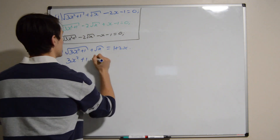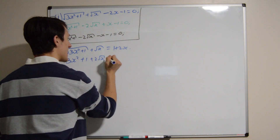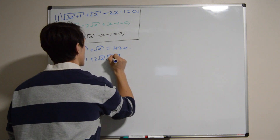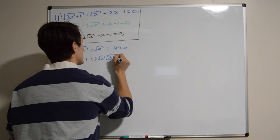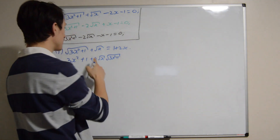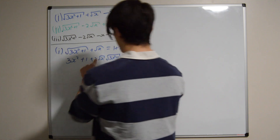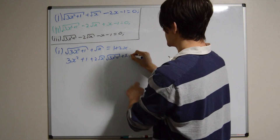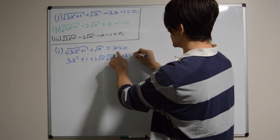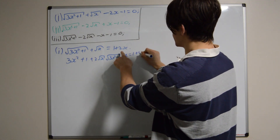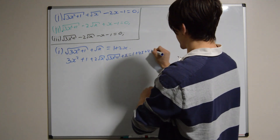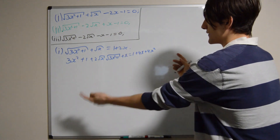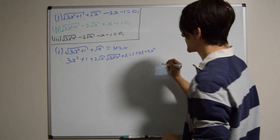This times this times 2 is going to be plus 2 times square root of x times the square root of 3x squared plus 1. And don't forget, squaring the square root of x gives you plus x. This is actually equal to 1 plus 4x plus 4x squared. I'm going to move everything, rearrange and cancel.